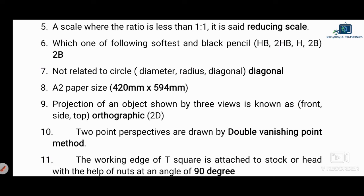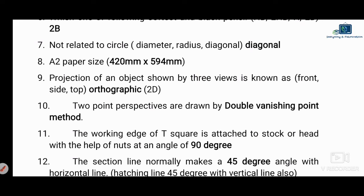Next question: which is the softest and blackest pencil? The softer the pencil, the blacker it is. The grade 9H is the hardest; going toward B grades increases softness. The softest pencil is 7B. Grades include H, F, HB, and B, with 7B being the softest option.